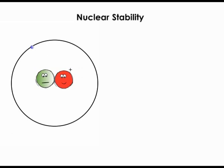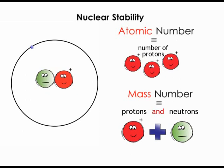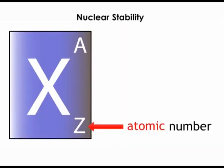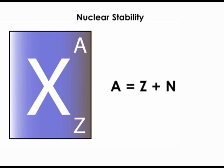Nuclear stability. The nucleus of an atom has a specific number of protons and neutrons. The number of protons in the nucleus is called the atomic number, while the sum of the number of protons and neutrons is called the mass number. If an atom X has atomic number Z with N neutrons and mass number A, it can be represented as shown here, where A is equal to Z plus N.